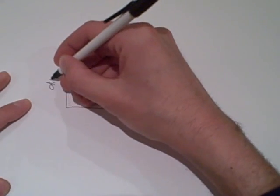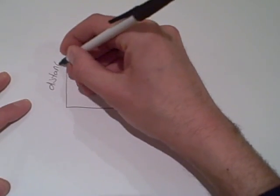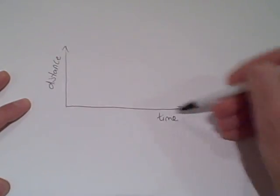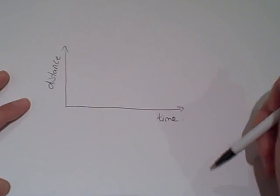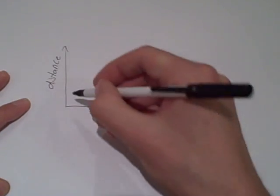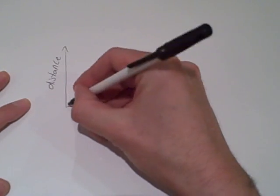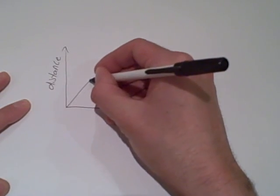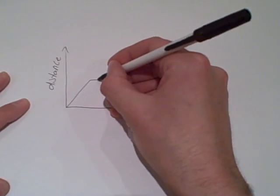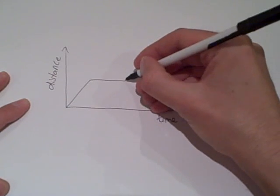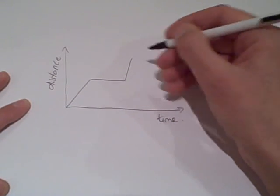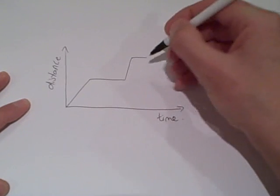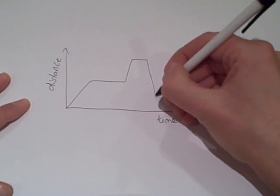Let's think about the distance-time graph first. We've got distance on the vertical axis and time on the horizontal axis. Distance-time graphs often consist of simple straight-line sections, which might go upward, then horizontal, then steeper, then horizontal again, and then coming back down.